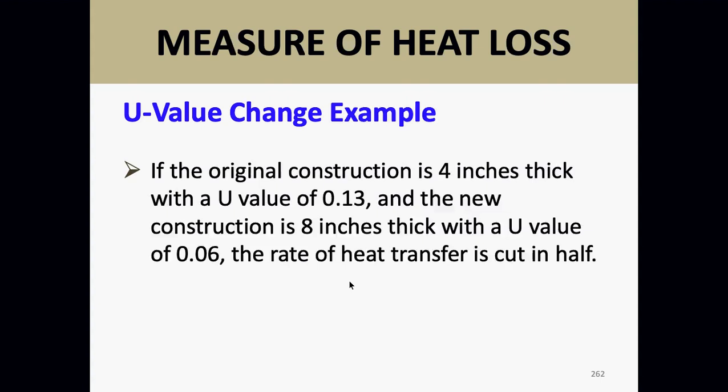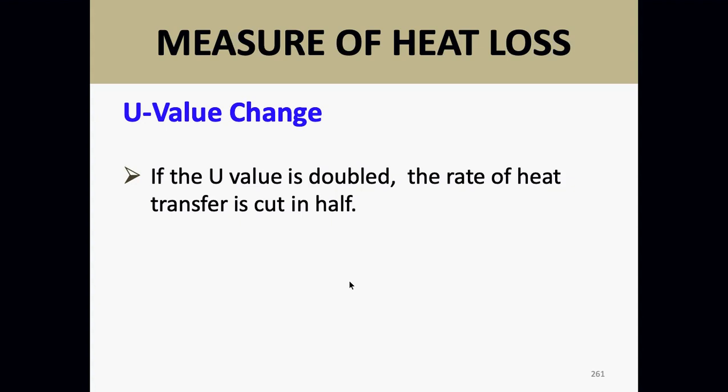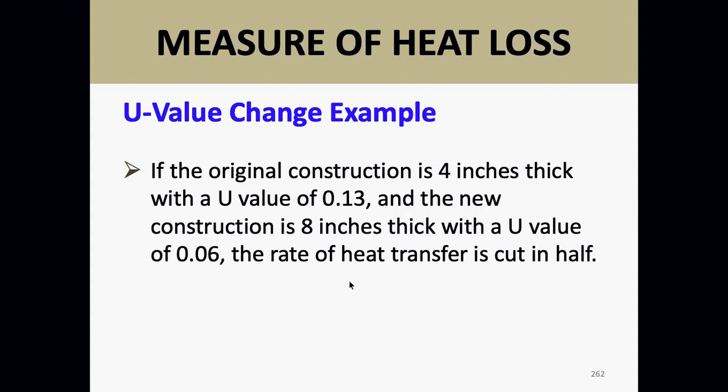When you double an R-value, each additional layer of insulation is less effective than the original. But U-values work completely differently: once you double a U-value, the rate of heat transfer is cut in half. For example, if the original construction is 4 inches thick with a U-value of 0.13, and new construction is 8 inches thick with a U-value of 0.06, the rate of heat transfer is cut in half.